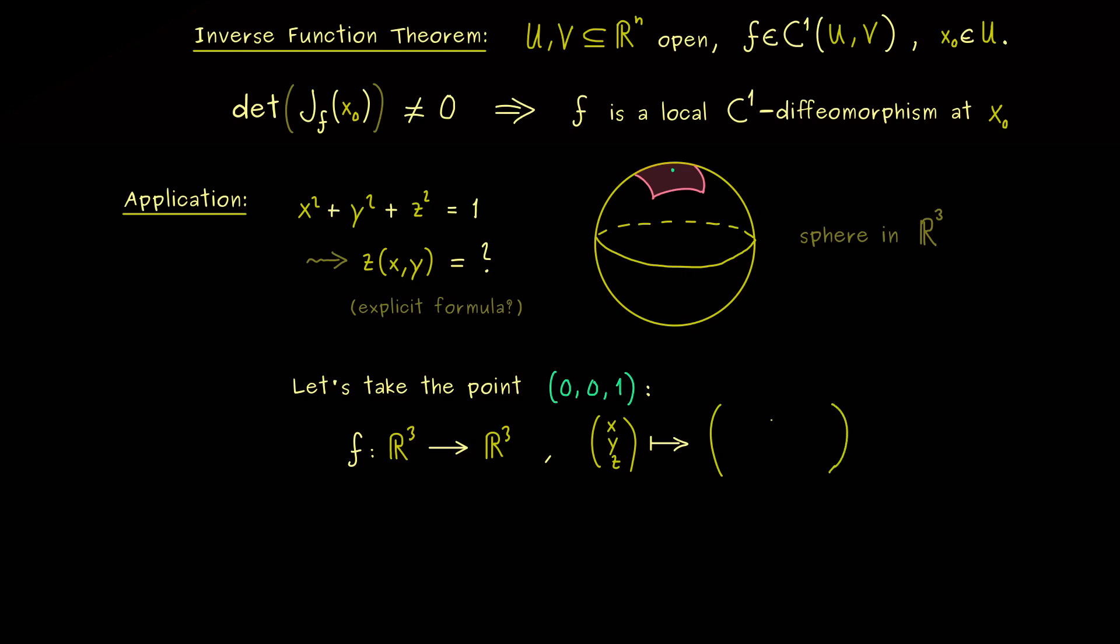Hence what we could do is to leave x and y as they are and the last component could be the actual function we need. This means there we put x squared plus y squared plus z squared. Therefore in the end, we are only interested in the case that the last component of the image of f is equal to 1.